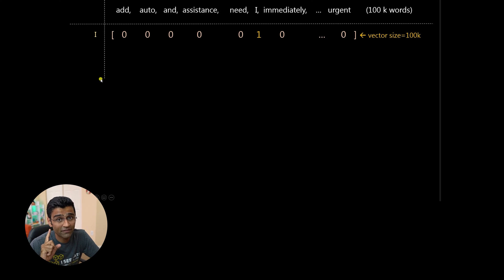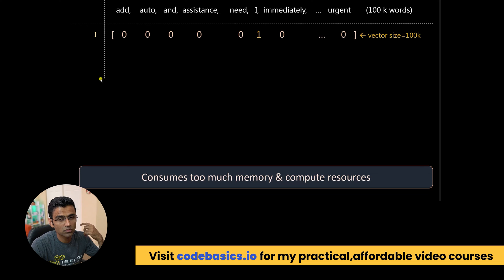So now you multiply 500 with 100K and that much memory I need just to represent one email into a vector. So it consumes not only too much memory, but when you are doing machine learning, it will waste a lot of compute resources. So that's the disadvantage number two.